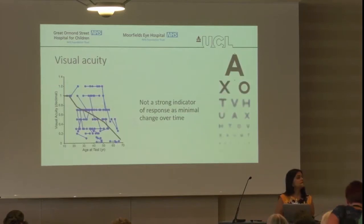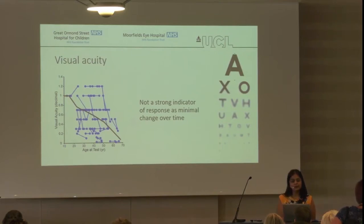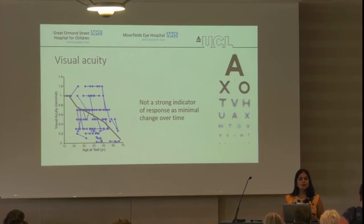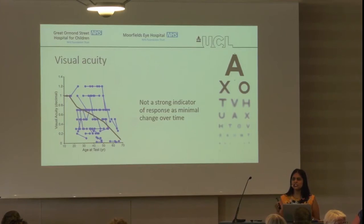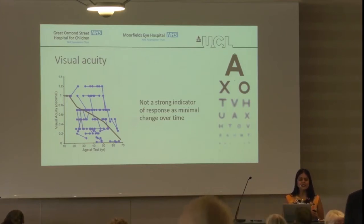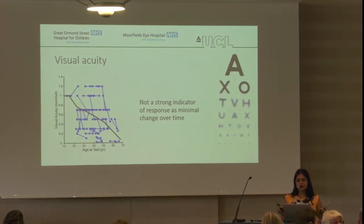The first thing we did is look at their visual acuity, their central visual acuity. There are quite a few horizontal lines on the graph, which means that over time the vision didn't change very much. So visual acuity isn't the best indicator of a treatment response over a minimal period of time.